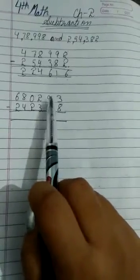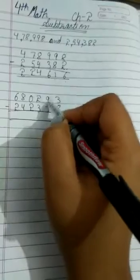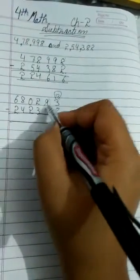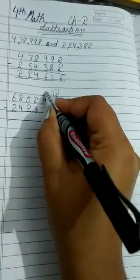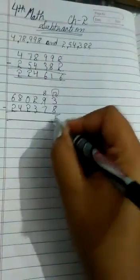We will take from tens place. From here it is 9. If we give a borrow from here to this one's place, it becomes 13, and here what is left is 8. Now 13 minus 8 is 5, 8 minus 7 is 1.